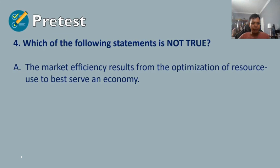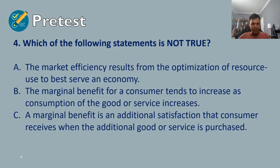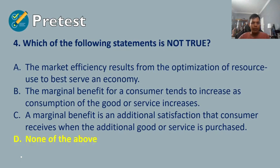Question number four: which of the following statements is not true? A) market efficiency results from the optimization of resource use to best serve an economy; B) the marginal benefit for a consumer tends to increase as consumption of the good or service increases; C) a marginal benefit is the additional satisfaction a consumer receives when an additional good or service is purchased; or D) none of the above. The answer for number four is letter D, none of the above — meaning that statements A, B, and C were all true.